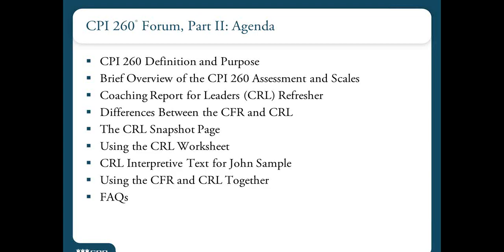During that presentation, we met John Sample. He's a real client of mine and we ran through his client feedback report results. At that time, we came up with a series of strengths and possible developmental opportunities for him based on his CPI 260 scale scores. So today, as Laura indicated, I want to continue that conversation about John, except I'd like to emphasize the coaching report for leaders — that second report for the CPI 260. That's the narrative report, the one that doesn't show any scale scores or scale names, but uses scale scores behind the scenes to come up with a narrative about strengths, style, and developmental opportunities.